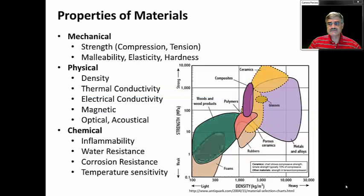This first slide gives an overview of the type of properties that we use to describe materials. We can describe materials in terms of their mechanical properties, their physical properties, or their chemical properties.